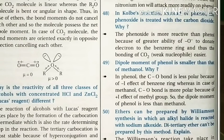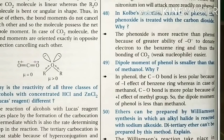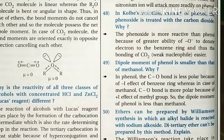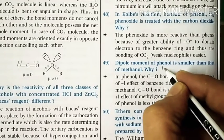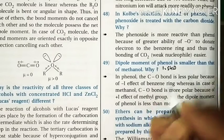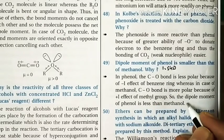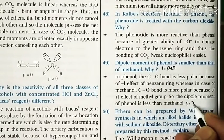Question 49: The dipole moment of phenol is smaller than that of methanol. Why? In phenol, the CO bond is less polar due to the electron-withdrawing negative inductive effect of the benzene ring, whereas in methanol it is more polar due to the positive inductive effect of the methyl group. As a result, phenol has a lower dipole moment of 1.54 D compared to methanol's 1.71 D.